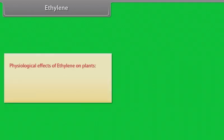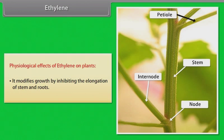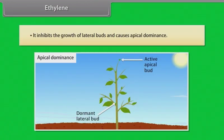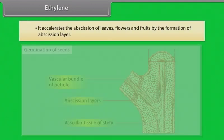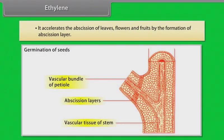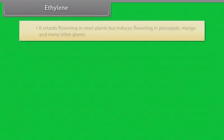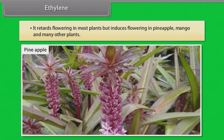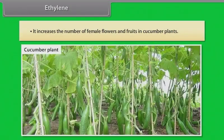Ethylene. Physiological effects of ethylene on plants. It modifies growth by inhibiting the elongation of stem and roots. It inhibits the growth of lateral buds and causes apical dominance. It accelerates the abscission of leaves, flowers and fruits by formation of abscission layer. It retards flowering in most plants, but induces flowering in pineapple, mango and many other plants. It increases the number of female flowers and fruits in cucumber plants.